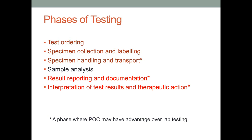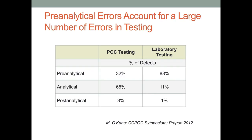Pre-analytical errors account for a large number of errors in testing. Data from a 2012 Prague symposium highlights differences between point-of-care and laboratory testing. The majority of point-of-care testing errors are analytical, but about a third are pre-analytical. With laboratory testing, analytical errors are fairly small, but approximately 88% of a very small number of overall errors are pre-analytical. That does not mean 88% of lab tests have pre-analytical errors — just that most errors in lab testing, when they occur, are pre-analytical.